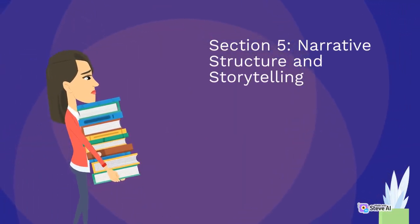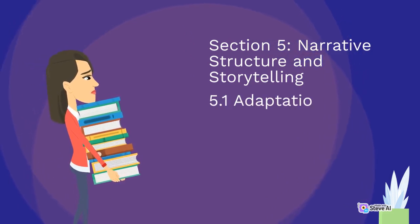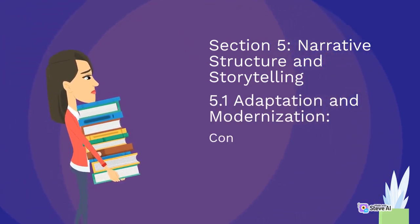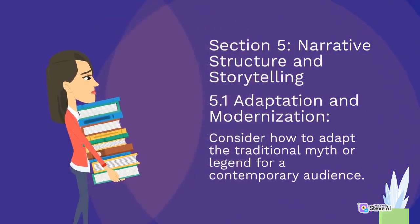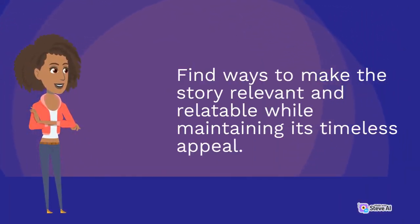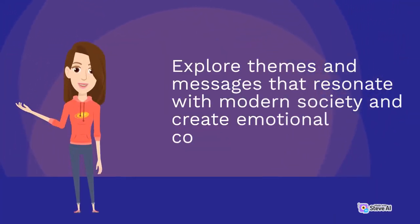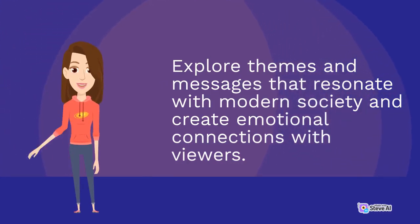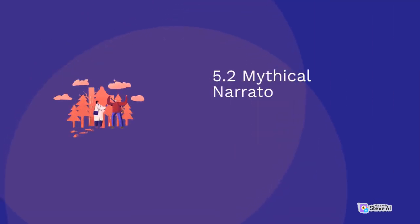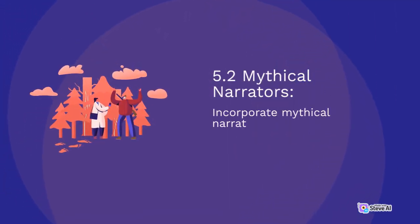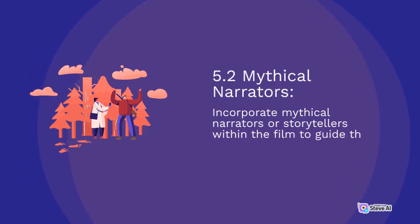Section 5: Narrative Structure and Storytelling. 5.1 Adaptation and Modernization. Consider how to adapt the traditional myth or legend for a contemporary audience. Find ways to make the story relevant and relatable while maintaining its timeless appeal. Explore themes and messages that resonate with modern society and create emotional connections with viewers. 5.2 Mythical Narrators. Incorporate mythical narrators or storytellers within the film.